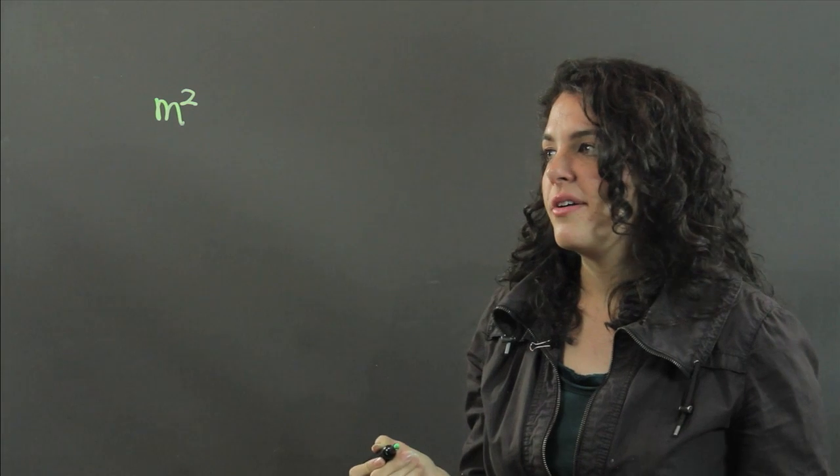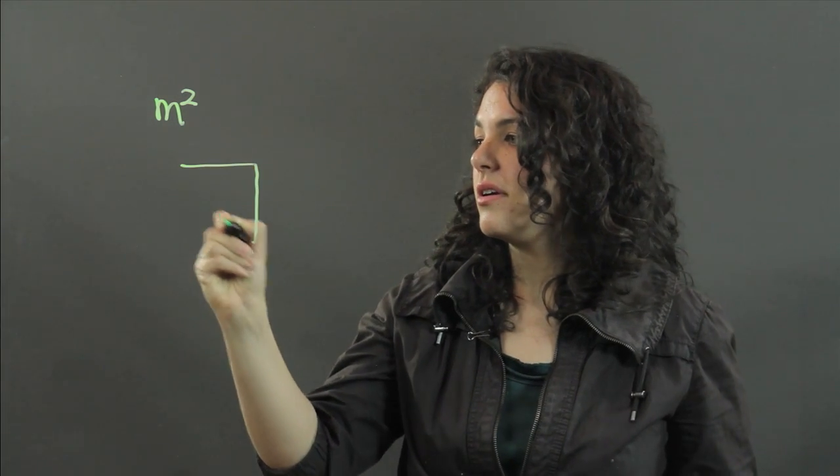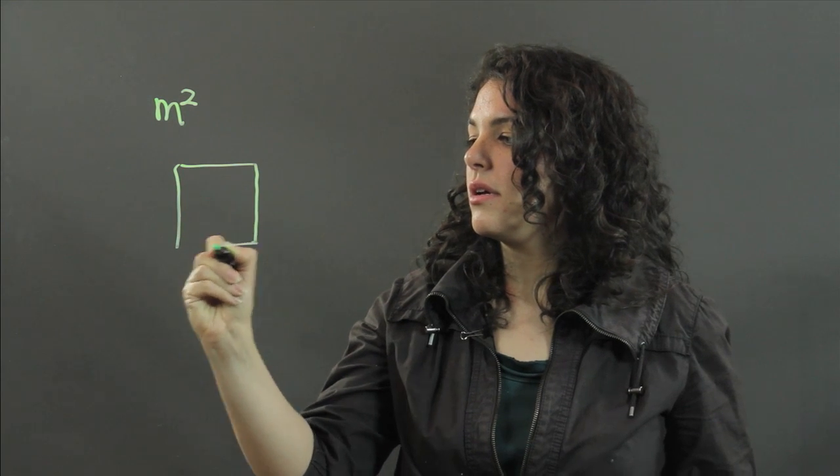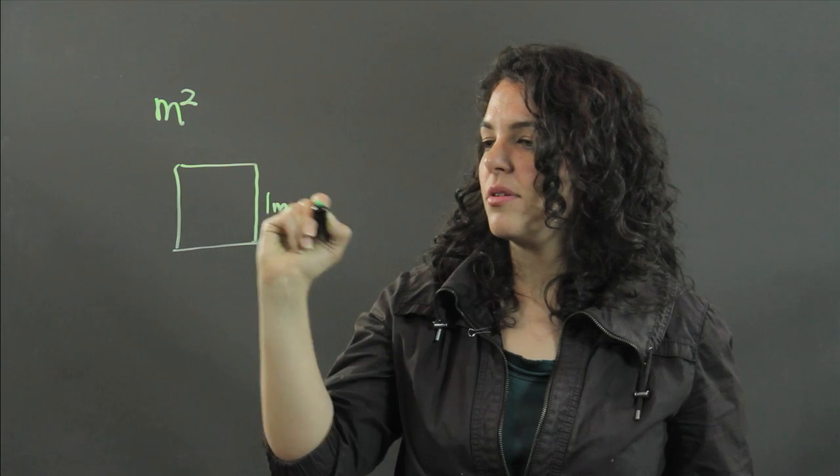And a meter squared is basically the area of a square that has sides of length one meter.